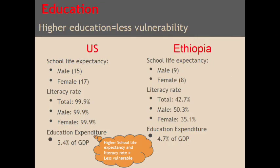The literacy rate in the U.S. is 99 percent, while in Ethiopia it is 47.2 percent, showing that most Americans can read whereas less than half of Ethiopians can. By comparing education between the U.S. and Ethiopia, the U.S. is less vulnerable to drought because higher education gives people better-paid jobs, and in the long run, higher income, which they can spend on purchasing resources to withstand the drought.